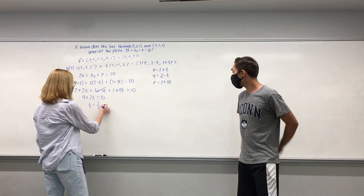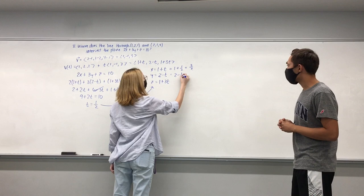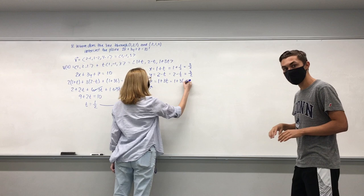Now we use this t value that we have to plug it directly back into the parametric equations to get corresponding values for x, y, and z. And once we do this, those are the x, y, and z coordinates of the intersection point.